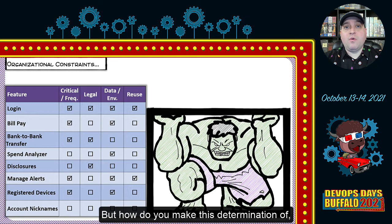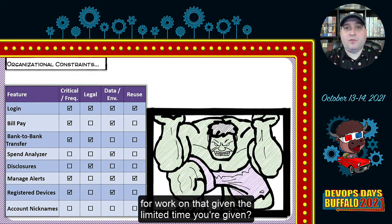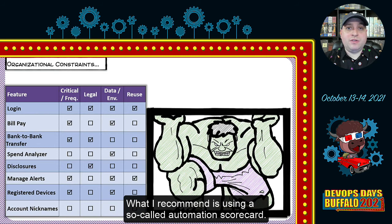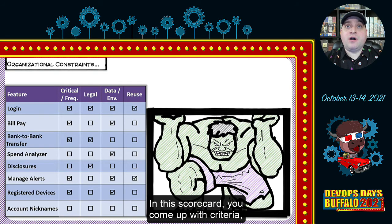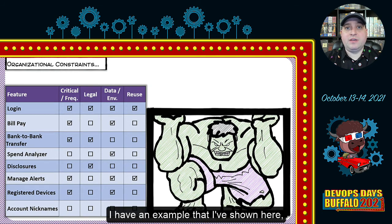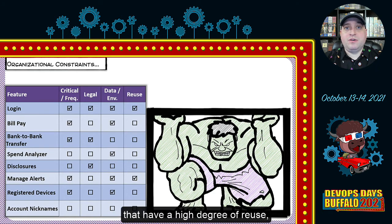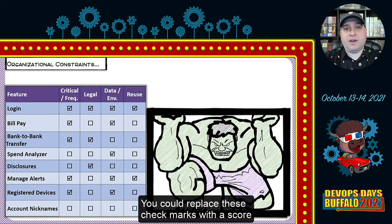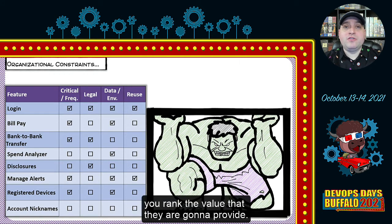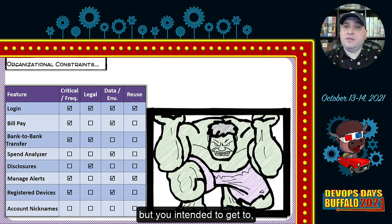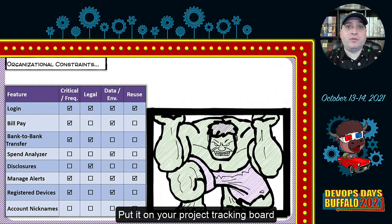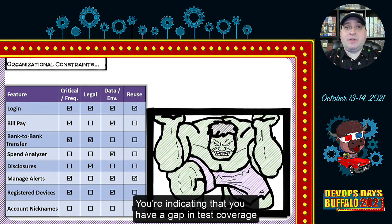To determine what's a good candidate for automation, I recommend using an automation scorecard. You come up with criteria — what you believe to be the most important things. For example, in online banking, you look at things on the critical path, with legal risk, or with a high degree of reuse that you can extend to further flows. You can replace check marks with a score from 0 to 10 for each area, rank the value of features you're planning to work on, and work from the top of the list down. Anything you intended to automate but didn't get to can be identified as technical debt on your project tracking board.